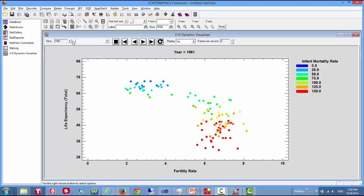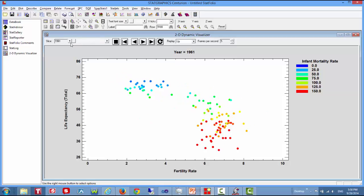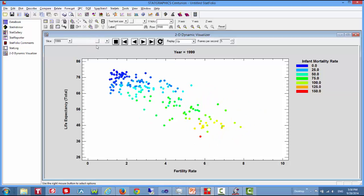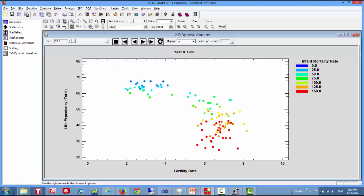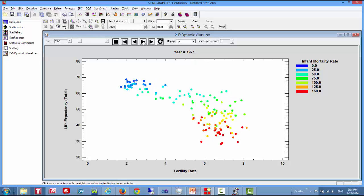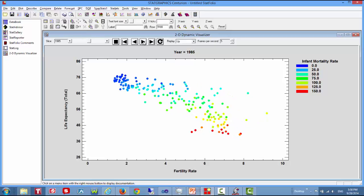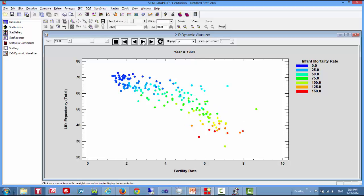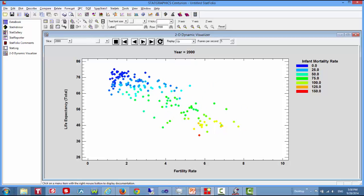I can use this slider on the statlet toolbar to change the year. In this data, the year ranges from 1961 through 2009. I can also let the year change automatically, and you'll see a general tendency of the world to move toward higher life expectancies, lower fertility rates, and lower infant mortality. As you'll see, most of the red disappear as time evolves.